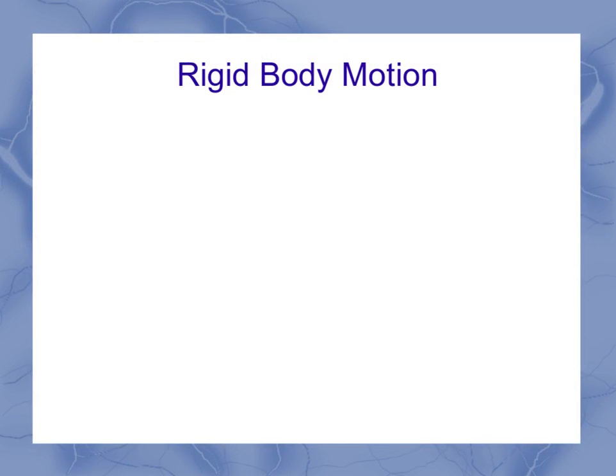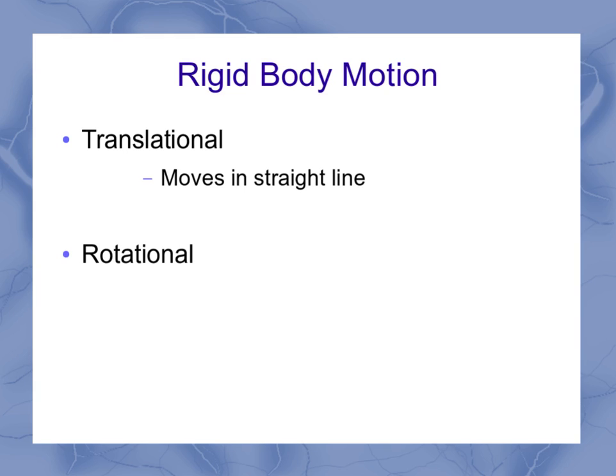So now we can talk about rigid body motion. It can have translational motion, moves in a straight line, or it can have rotational, where it moves around some pivot point.